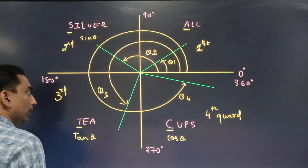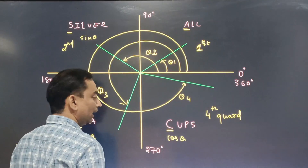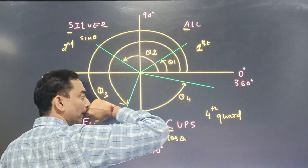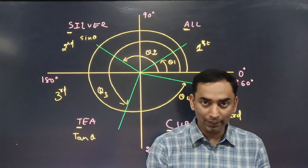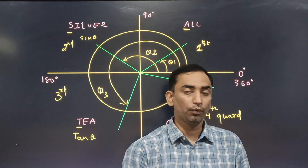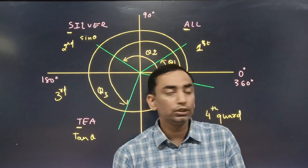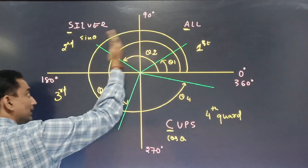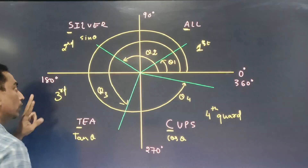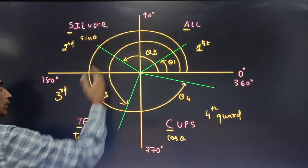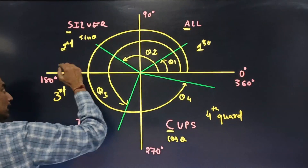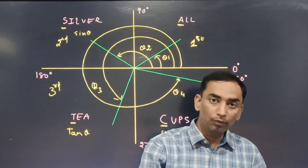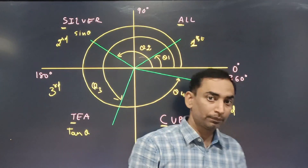For example, 45 degrees is between 0 and 90 degrees, so it's in the first quadrant. Since 'All' applies, sin 45, cos 45, and tan 45 are all positive. For 150 degrees, which is between 90 and 180 (second quadrant), only sin 150 is positive — cos 150 and tan 150 will give negative answers.